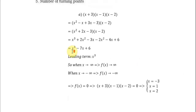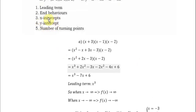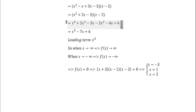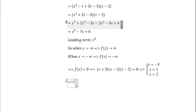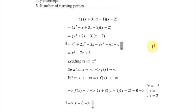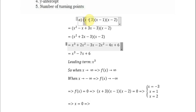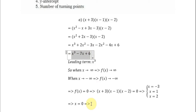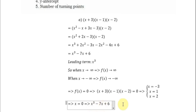The next one is the y-intercept. For the y-intercept, x will be equal to 0. We can also use the expanded form. We put x equal to 0 in each x term, so we find that y becomes 6.